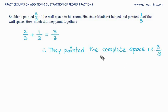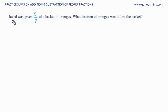Therefore, they have painted the complete space, which is 3 upon 3. Let's do the next one. Javed was given 5 upon 7 of a basket of oranges. What fraction of oranges was left in the basket?